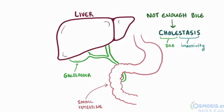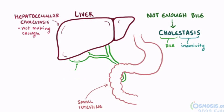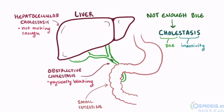This reduction in bile flow can basically be split into two types: hepatocellular cholestasis, where for some reason the hepatocytes aren't making enough bile, and obstructive cholestasis, where something's physically blocking the flow of bile.